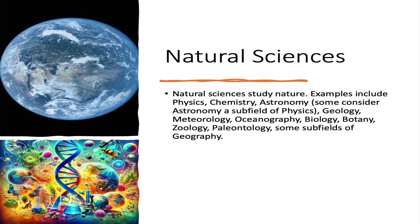Further examples include biology, botany, zoology, paleontology, and some subfields of geography. So physical geography would be a natural science, while cultural geography would fall into social sciences.